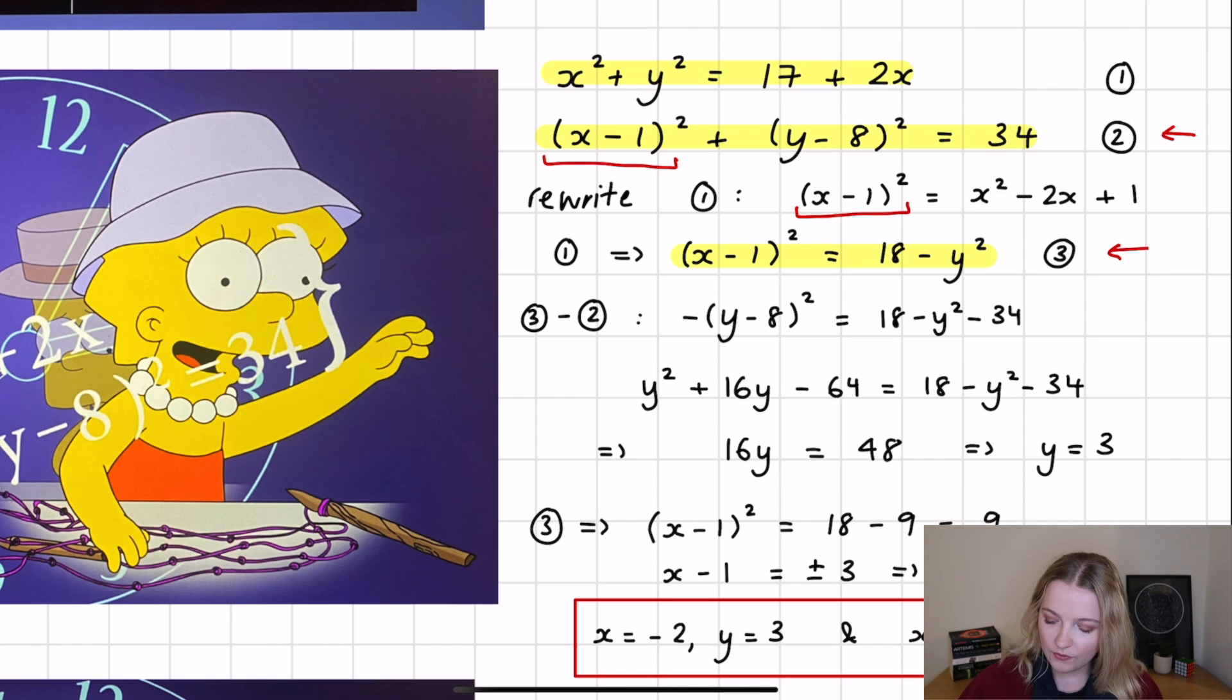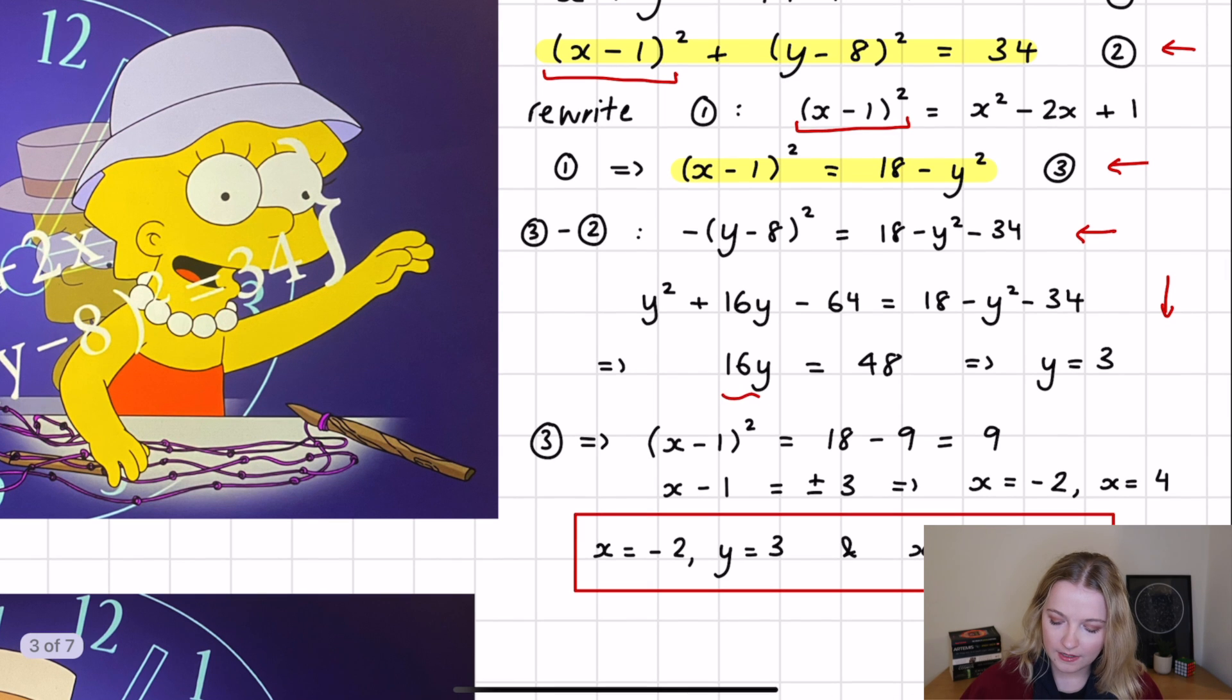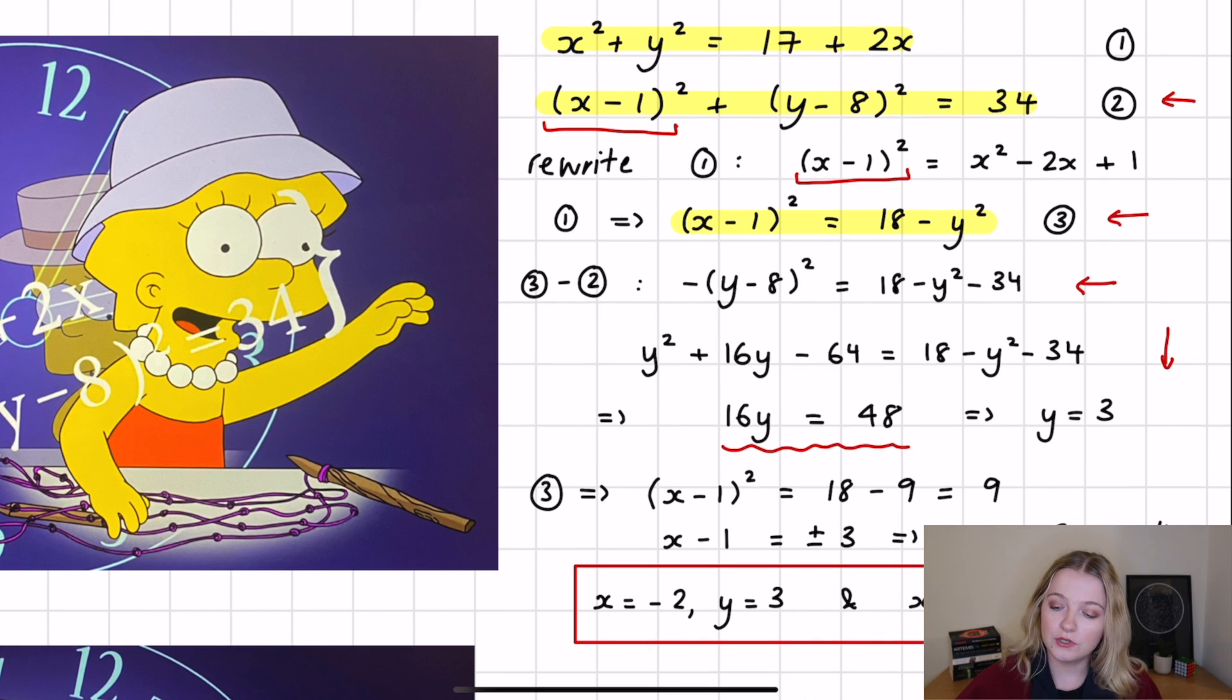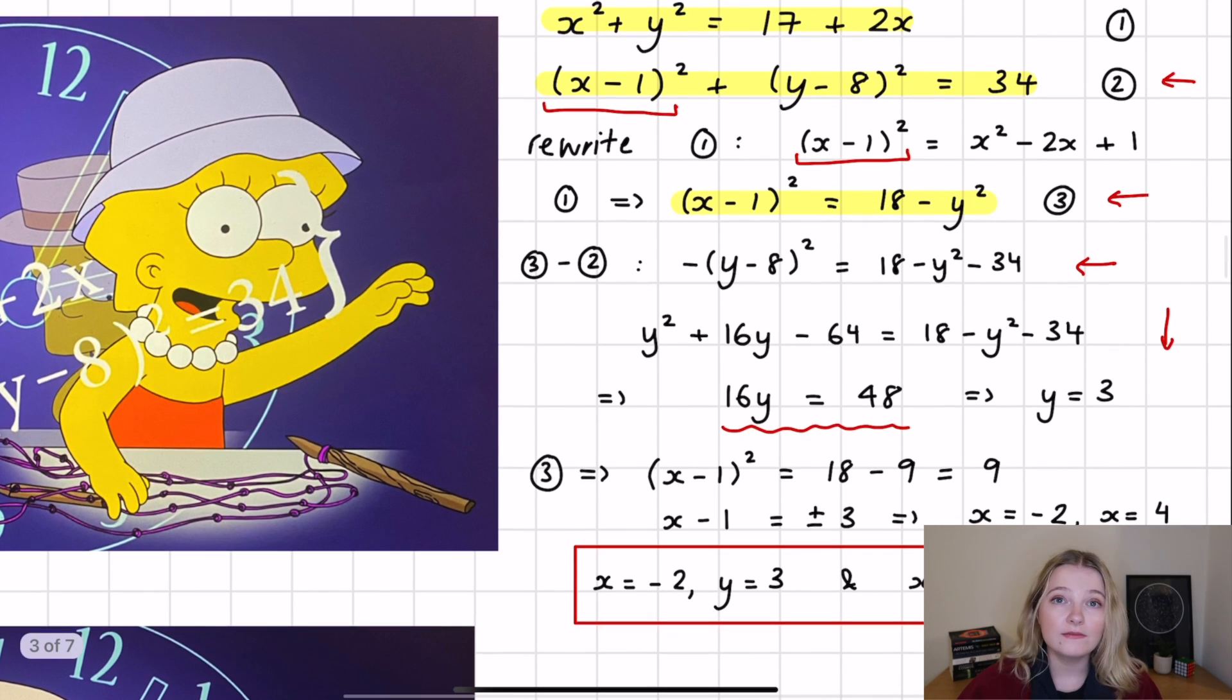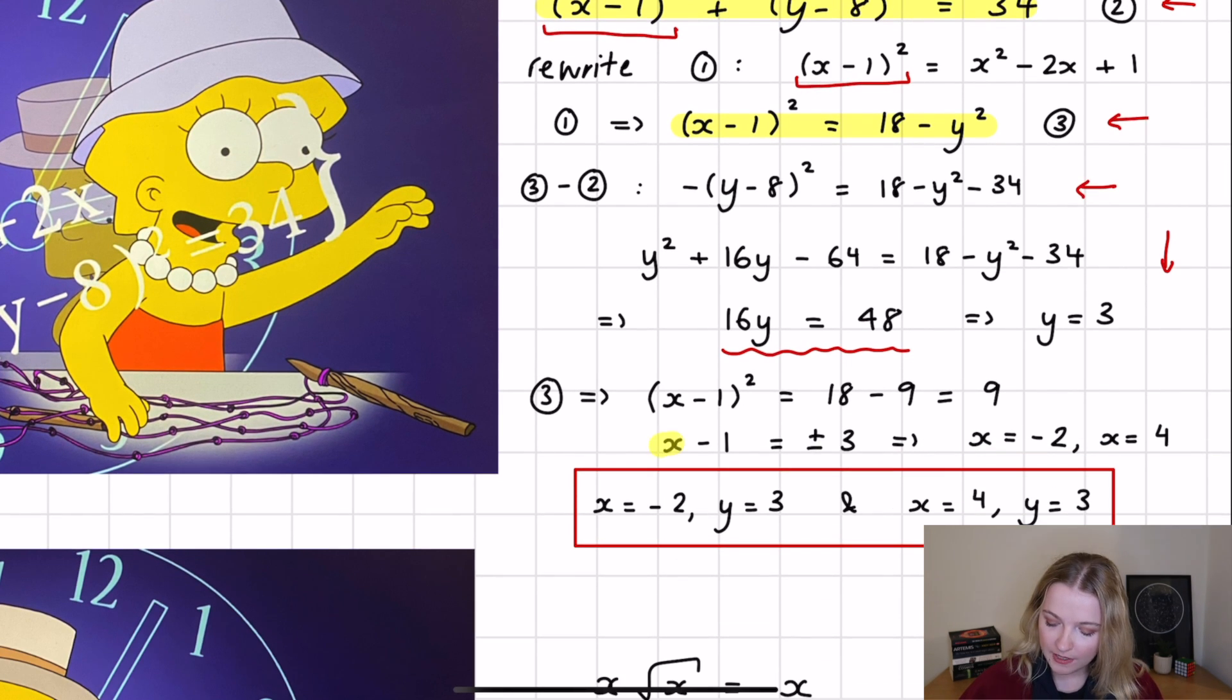And then all it's left to do is take this equation number three, because we have an X minus one all squared in it, you can minus equation two, which also has an X minus one squared, that will get rid of the X's. And then you're left with this equation here, which gives you an equation in terms of Y. And then we just simplify. And in simplifying, we find that 16 Y equals 48, which therefore implies that Y equals three. So we have the value for Y. All that's left to do is substitute that back in. I chose to substitute it back into equation three, just because it's quite a neat form of the equation. And in doing so, what you can find is that X minus one equals plus or minus three, which means there's two values for X. So all you do is take the plus or the minus to find out what the value of X is. And what you find is that X is minus two, when Y equals three, and X also equals four, when Y equals three as well. And that's the answer. And that's the answer that we see in the episode as well.